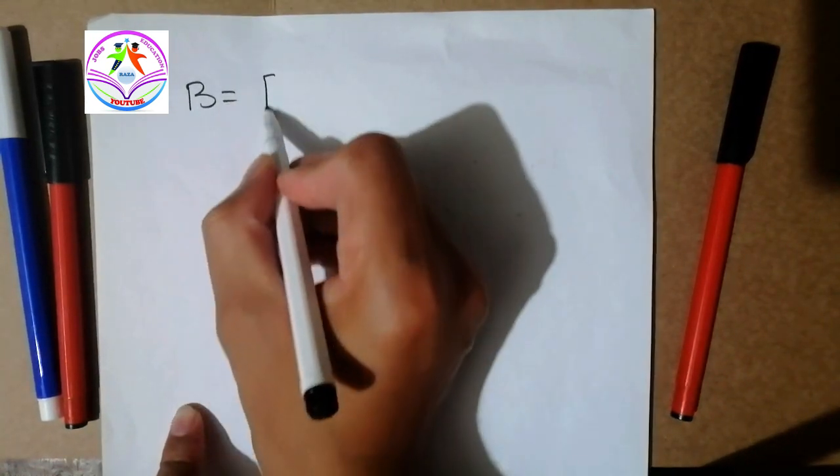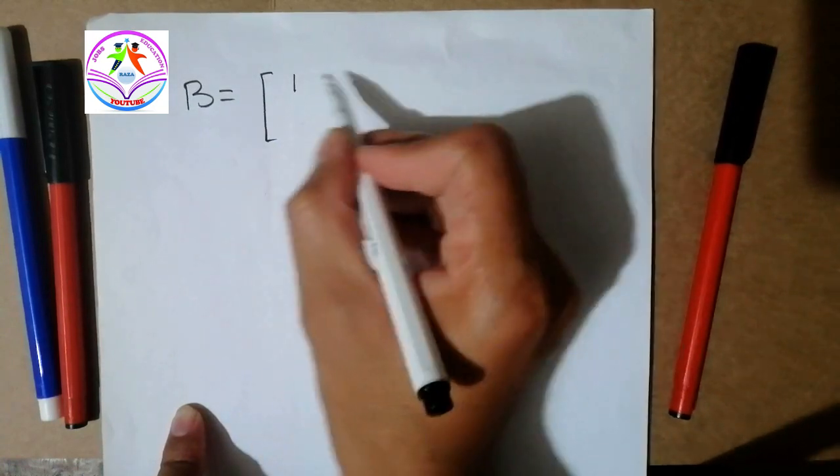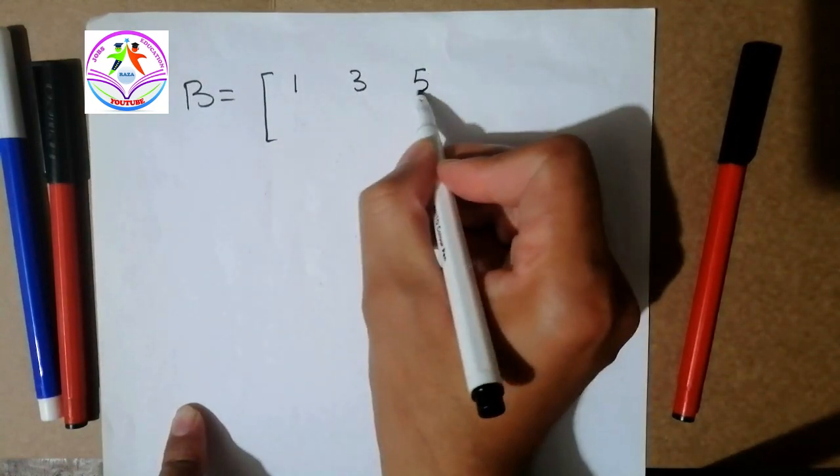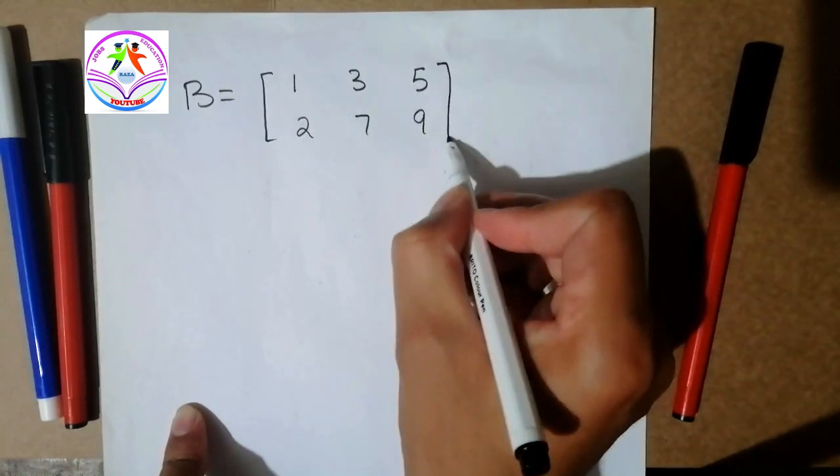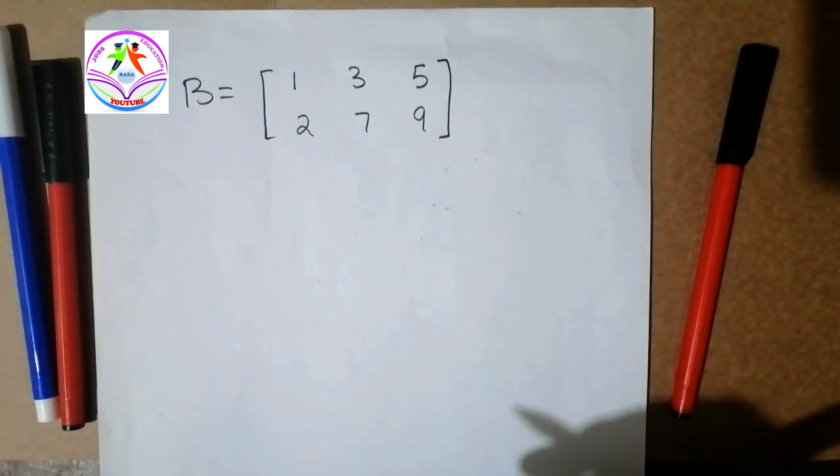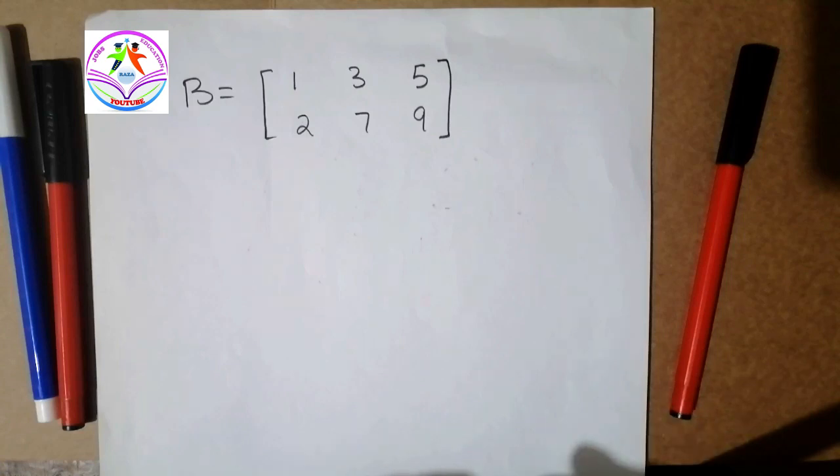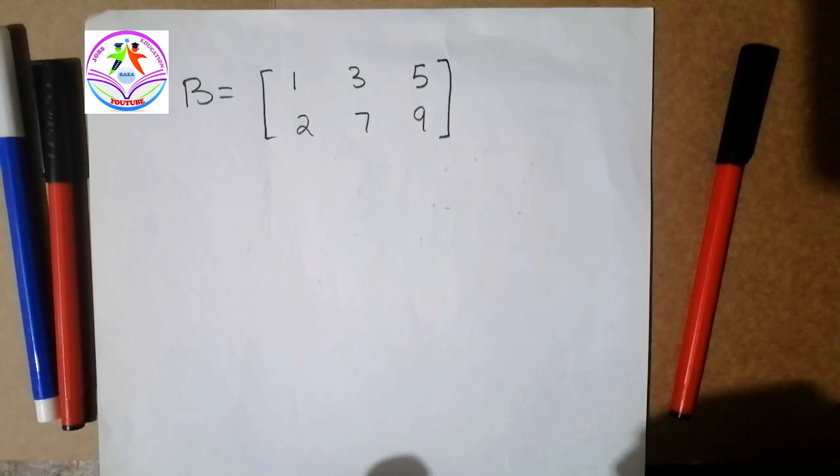Here we can write another example. Let's B is equal to 1, 3, and 5, 2, 7, and 9. So here we have a B matrix to elaborate and observe what's the solution.